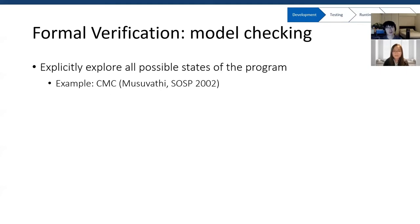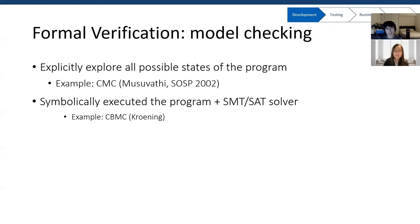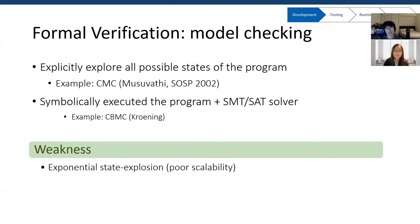There are two ways to do model checking. The first is to explicitly visit every possible state — actually running the program and building the state graph on the fly. An example is CMC, which checks the correctness of C programs using this method. Another way is symbolic model checking: such model checkers represent the program's behavior under different inputs with symbols. The correctness is then represented as a Boolean expression, which is sent to a solver to check satisfiability. An example is CBMC, used to check C or C++ programs. The issue is that complexity grows exponentially with program size, making it hard to model-check large systems.